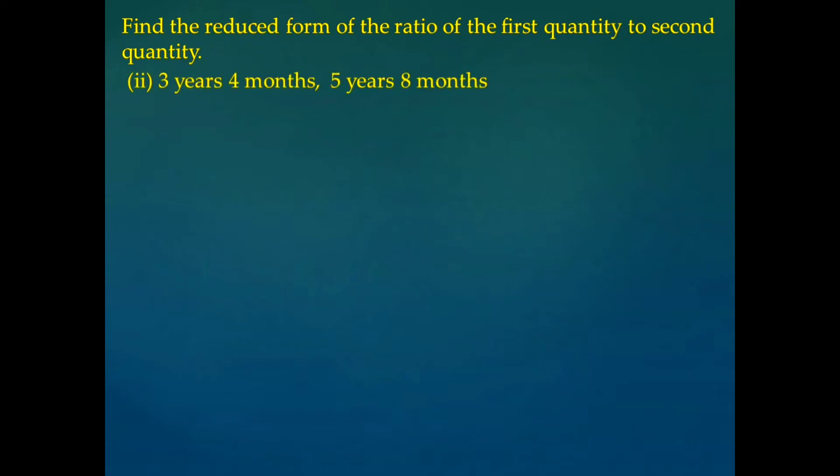Let us consider the next problem: 3 years 4 months and the second quantity is 5 years and 8 months. As we can see here, the two quantities given are not in the same unit — they are expressed in years and months. So we have to convert either years into months or months into years so as to have those quantities in the same unit.